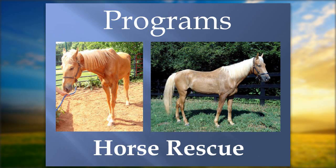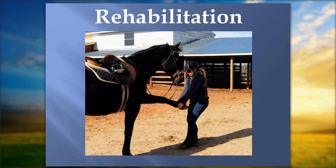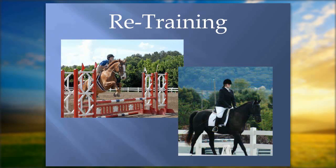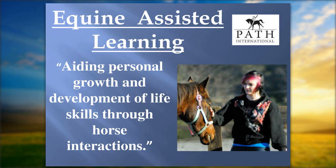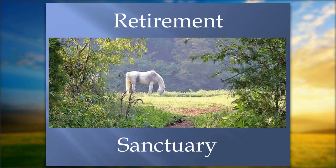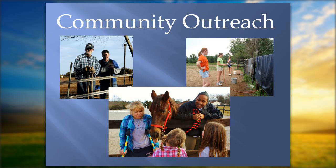What programs do you have? That is the next part of the business plan. Brook Hill Farm does horse rescue and rehabilitation, mostly of sport horses or injured horses — we help them heal and retrain them. We also have an equine assisted learning program aiding personal growth and life skills through horse interactions, and we provide retirement and sanctuary. For community outreach: do you give tours, have workshops, offer educational programs, a membership, or sell items? All of these should be listed under programs.